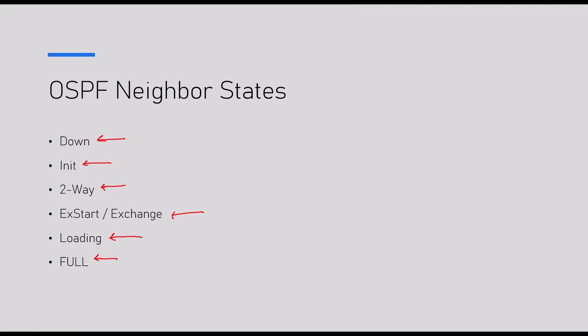After running SPF we become Full, which means we become adjacent. Different stages of adjacency lead to this point: Full means we agree on the complete topology database. Everything we have discussed ends with retrieving the database and having it be identical on both routers.